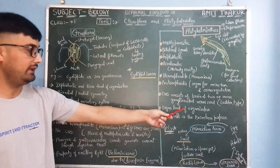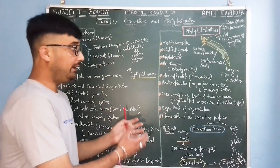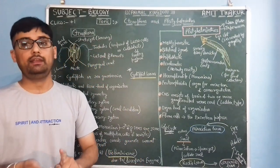So organ level of organization, flame cells for excretion purpose. Its life cycle is very important. Its life cycle includes two hosts, human beings and snails.